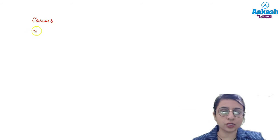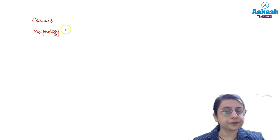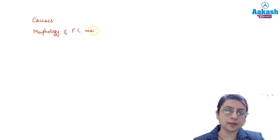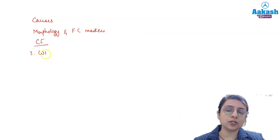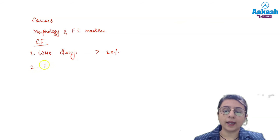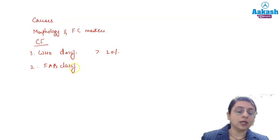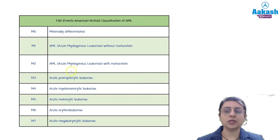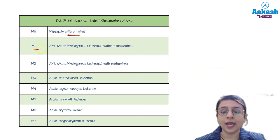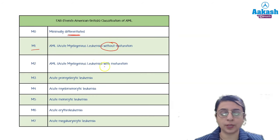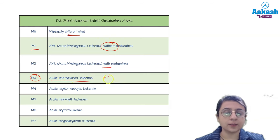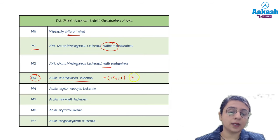Next, the WHO classification and FAB classification of AML are both very important. In FAB classification: M0 is minimally differentiated AML; M1 is without maturation; M2 is with maturation. M3 is very important — Acute Promyelocytic Leukemia, characterized by translocation t(15;17) and PML-RARA fusion gene. These are all important MCQ points. It has the best prognosis and treatment involves all-trans retinoic acid.